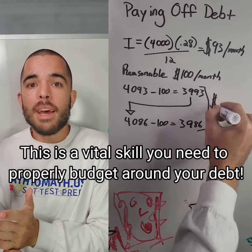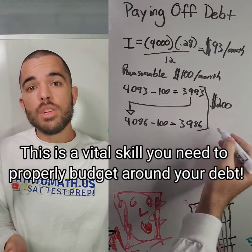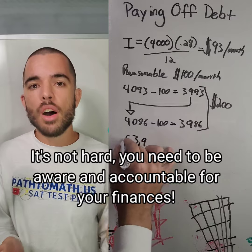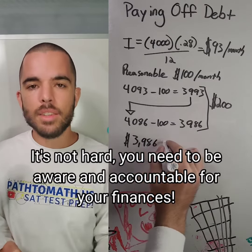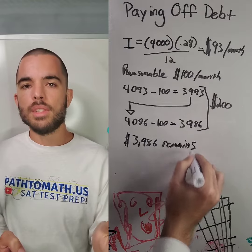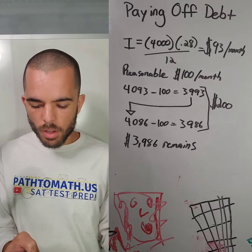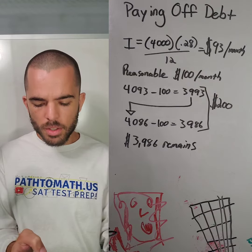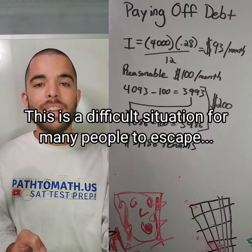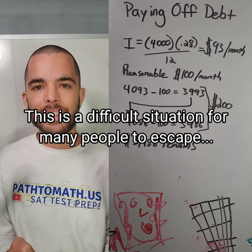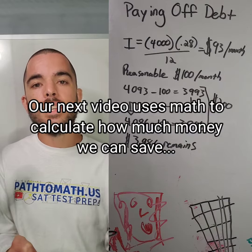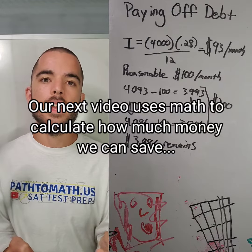One more month passes, you paid another $100, but you're paying $100 off of $4,086 because $3,993 needs to go back into that formula. You've paid off $200 of your own money, but you're still left with $3,986 in debt — you only knocked down $14 worth of your debt even though you spent $200.